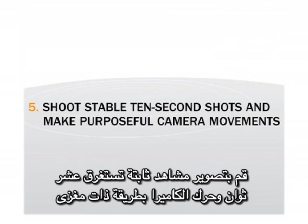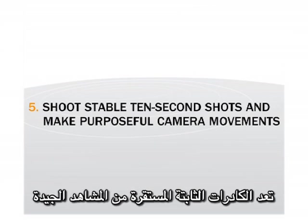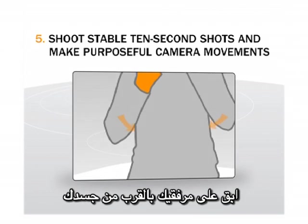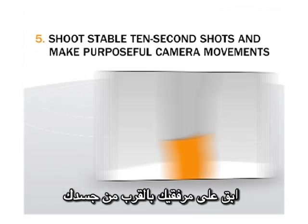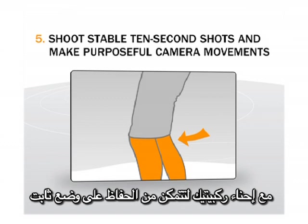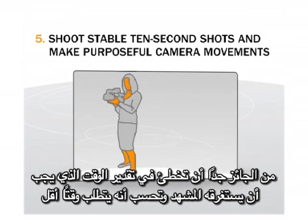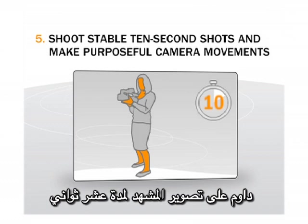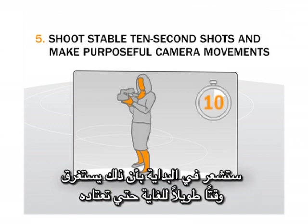Shoot stable 10-second shots and make purposeful camera movements. Stable still shots are good shots. Keep your elbows close to your body and your knees bent for stability. It's easy to underestimate how long you need to hold a shot — hold it for 10 seconds. This will feel like much longer until you get used to it.